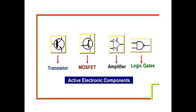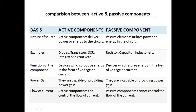This is a transistor. This is the symbol of transistor, which we will study in detail. In the first chapter, I am showing you only what is the symbol of transistor — it is a three-terminal device. This is the base terminal, this is the collector terminal, and this is the emitter terminal. Next is MOSFET — here I have shown the symbol of MOSFET. Then amplifier, and then logic gates — these are active components in any electronic circuit.